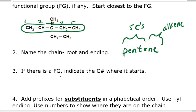If there's a functional group, and there is, indicate the carbon number where it starts. The functional group is an alkene. It's between carbons one and two, which means it starts at carbon one. So we're going to put a one in front of 'pentene' to tell us that that double bond is between one and two. If it was between two and three, we'd say 'two-pentene.' Or between three and four, we'd say 'three-pentene.' It tells us where in that chain we have a double bond.